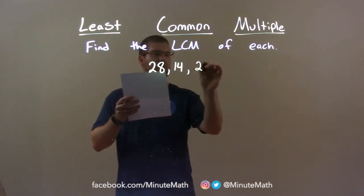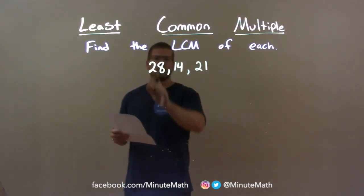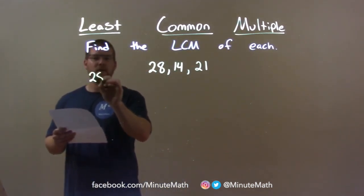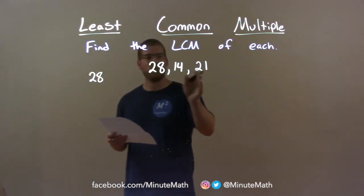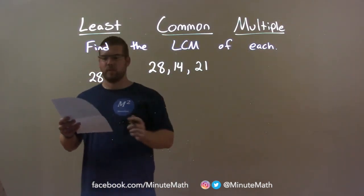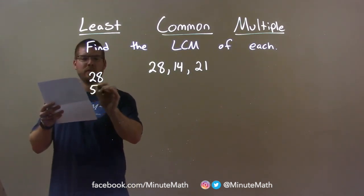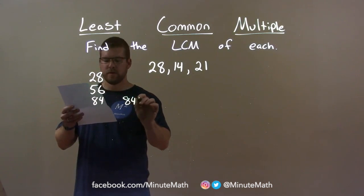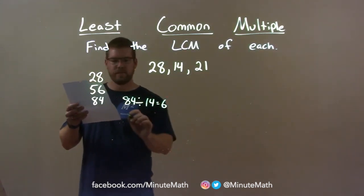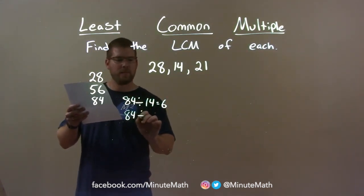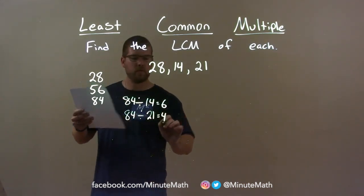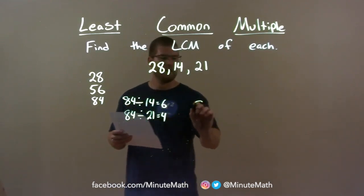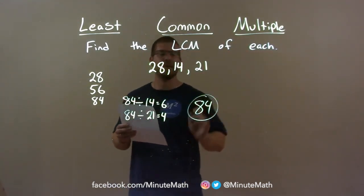28, 14, and 21. I take the largest, 28, and go through its multiples trying to find the first one divisible by both 14 and 21. 28 is not divisible by both, neither is 56, but 84 is. 84 divided by 14 is 6, and 84 divided by 21 is 4. So 84 is the first multiple of 28 divisible by the other two. My final answer is just 84.